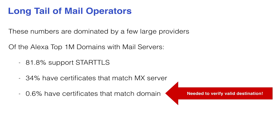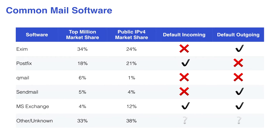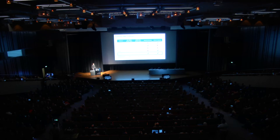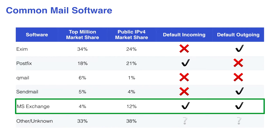How did we end up in this state? A lot of common mail software doesn't provide STARTTLS by default. In fact, the only software that actually does both incoming and outgoing is Microsoft Exchange. For outgoing TLS, there's really absolutely no reason that Postfix and Qmail are not initiating STARTTLS connections by default.